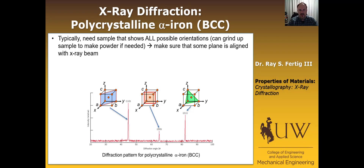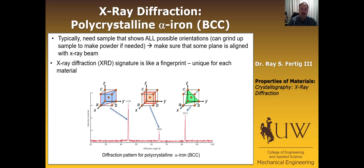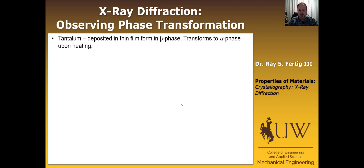If you don't have a polycrystalline sample you can grind the material into a powder to ensure crystals are oriented in the direction needed to get a signal. The key takeaway is not to memorize the signature of polycrystalline alpha iron, but rather that X-ray diffraction is like a fingerprint — it's unique for each material. We can take an unknown material, put it in an X-ray diffractometer, and determine what it's made of, and even decide whether it's crystalline.